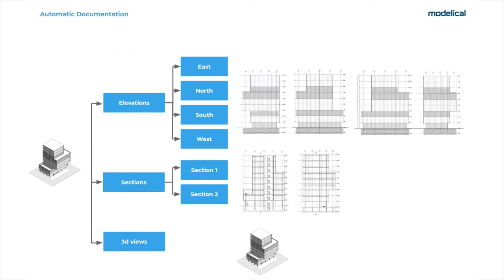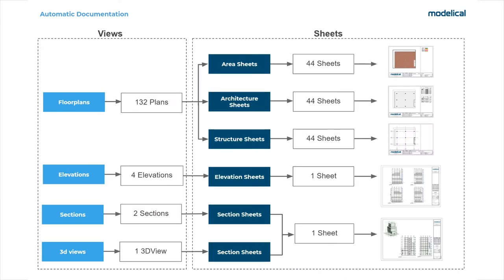Not only do we want to create floor plans, but also elevations for east, north, south and west, a couple of sections and a 3D view. Not only do I need to create views with their templates, but also to create sheets with their parameters and place those views in the sheets. I want to create 44 sheets with the area plans with a specific legend, and 44 sheets with the structural plans with no schedule. And I want to place all the elevations in one sheet and the sections and 3D view in another sheet.